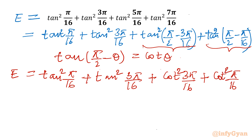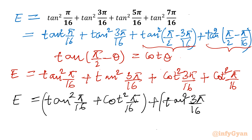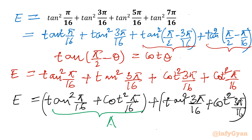Now I will club the first and last terms, and the second and second-last terms. So I can write E = [tan²(π/16) + cot²(π/16)] + [tan²(3π/16) + cot²(3π/16)]. I will call the first bracket A and the second bracket B. So ultimately we are calculating A + B.